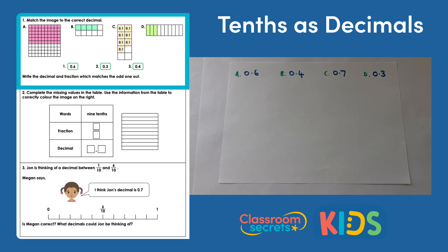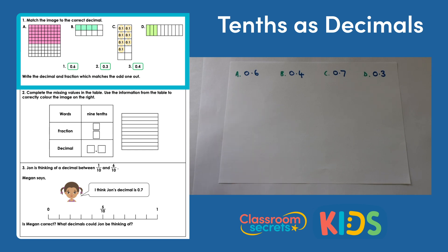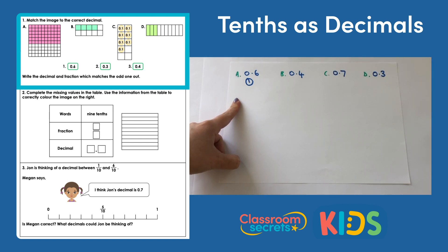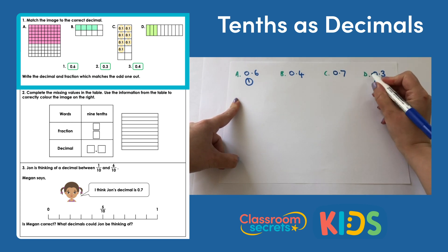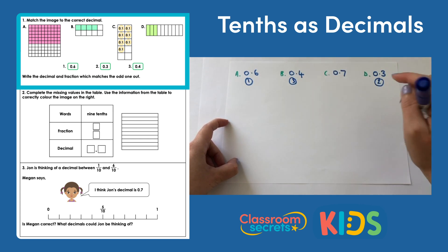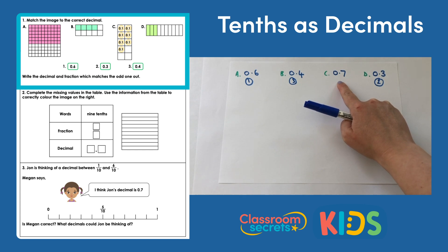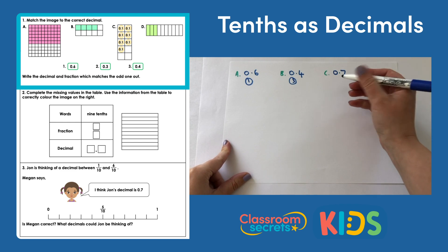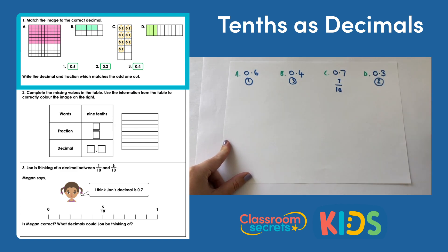We can now look at our options to see which have matched up and which one is the odd one out. Option one was 0.6 and that matched with A. Number two was 0.3, that was D. Number three was 0.4, that matched with B. So I know that C is the odd one out — 0.7 is the odd one out. I need to write the decimal, which I've done, and the fraction. So 0.7, this column here is my tenths, so the fraction would be seven tenths.